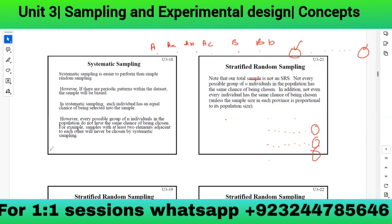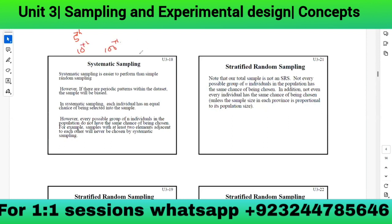Systematic sampling is easier to perform than simple random sampling because you simply select every kth number, which can even be automated by software. In systematic sampling, each individual has an equal chance of being selected. However, not every possible group of individuals has the same chance of being chosen — for example, samples with at least two adjacent elements will never be selected by systematic sampling.